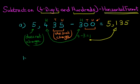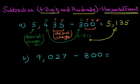Now let's look at a slightly different example. This time we have 9,027 minus 800. So 9,027 minus 800. Now again, following the same principles, we've got 00.